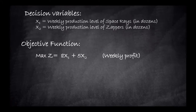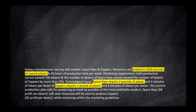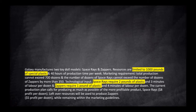To formulate the constraints we need to read carefully and formulate them one by one. Here is a portion of the text that deals with the constraints. We can see that the company has limited resources — one of their resources is plastic, and they have only 1,000 pounds. For the left hand side of each constraint we represent how much of the resource we actually use, and on the right hand side we put the limitation.